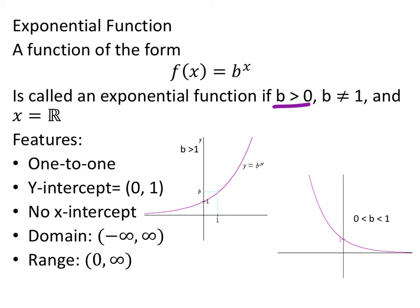And it just switches the way that it's turned here, this one's kind of cup this way. And when b is less than 1 and greater than 0, it gives us this type of cup here.